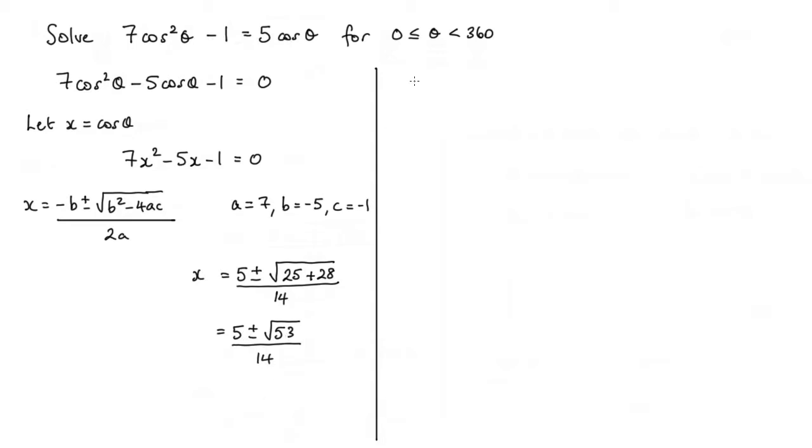So looking at those two values, I'll just write them out separately just for clarity. So we've got x equals 5 plus root 53 over 14, and we've also got x is 5 minus root 53 over 14.